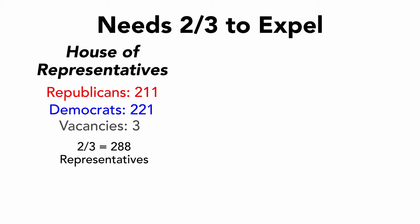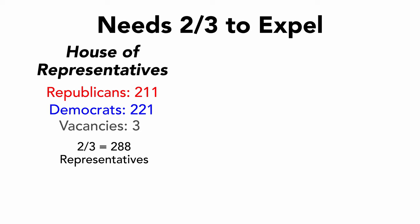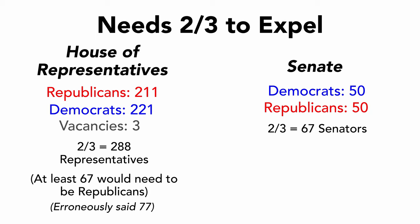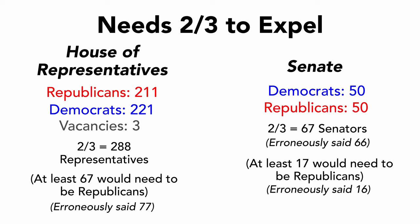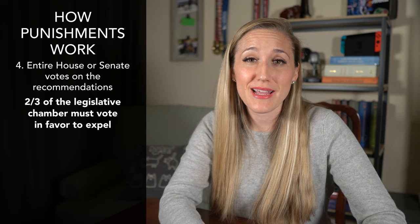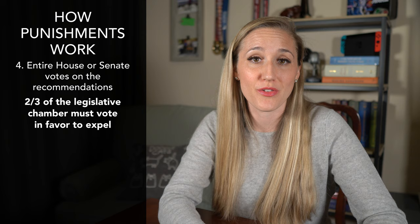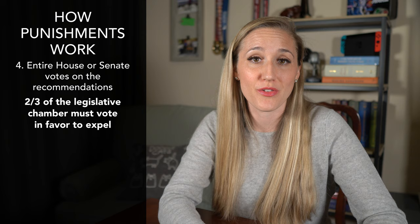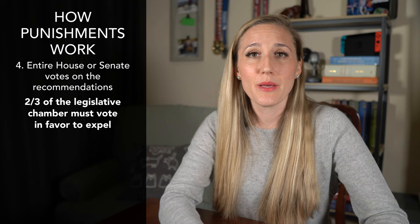To illustrate: in the House, there are currently 211 Republicans and 221 Democrats, with three vacancies. Two-thirds means 288 House representatives would need to vote to expel, meaning Democrats would need to convince 77 Republicans to expel their fellow Congress members. Similarly, in the Senate there are 50 Democrats and 50 Republicans, so reaching two-thirds — or 66 senators — means Democrats would need to convince 16 Republican senators to vote for expulsion. Considering the numbers, it's entirely possible these movements are being pursued less because they're likely to succeed and more to make a statement.